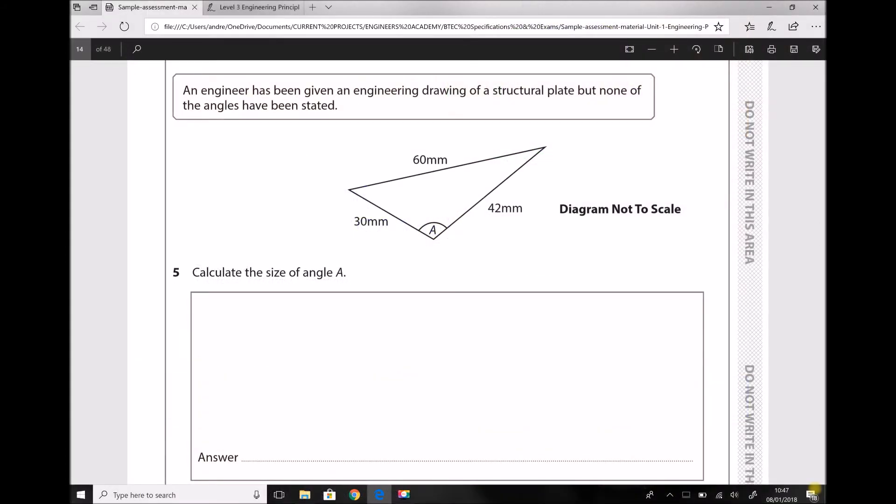Question five states: an engineer has been given an engineering drawing of a structural plate but none of the angles have been stated. Calculate the size of angle A. We have a diagram there that's not to scale.